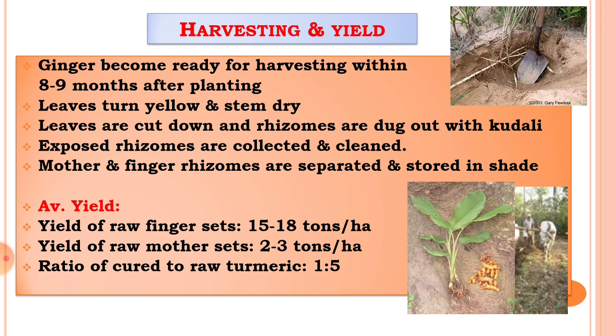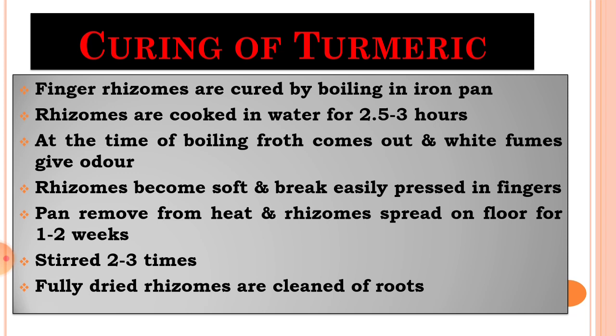This is the ratio of cure to raw turmeric. If you have 5 kg of raw turmeric, then after processing you will get 1 kg of cured turmeric. That process is called curing of turmeric.